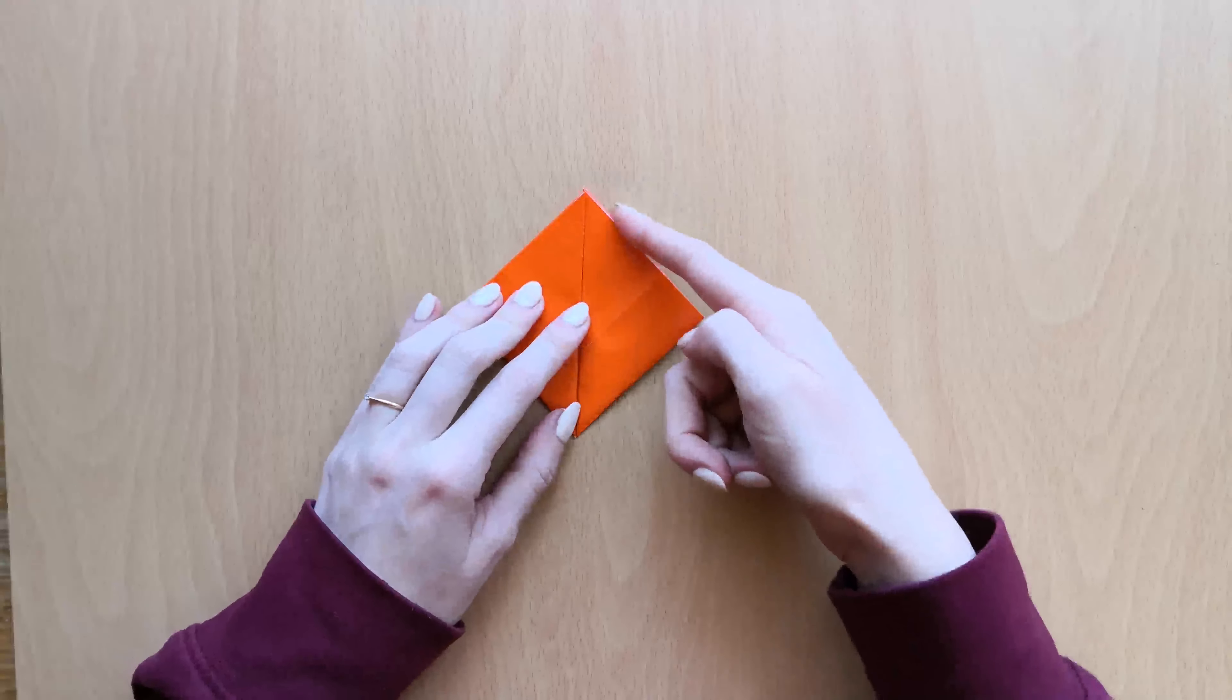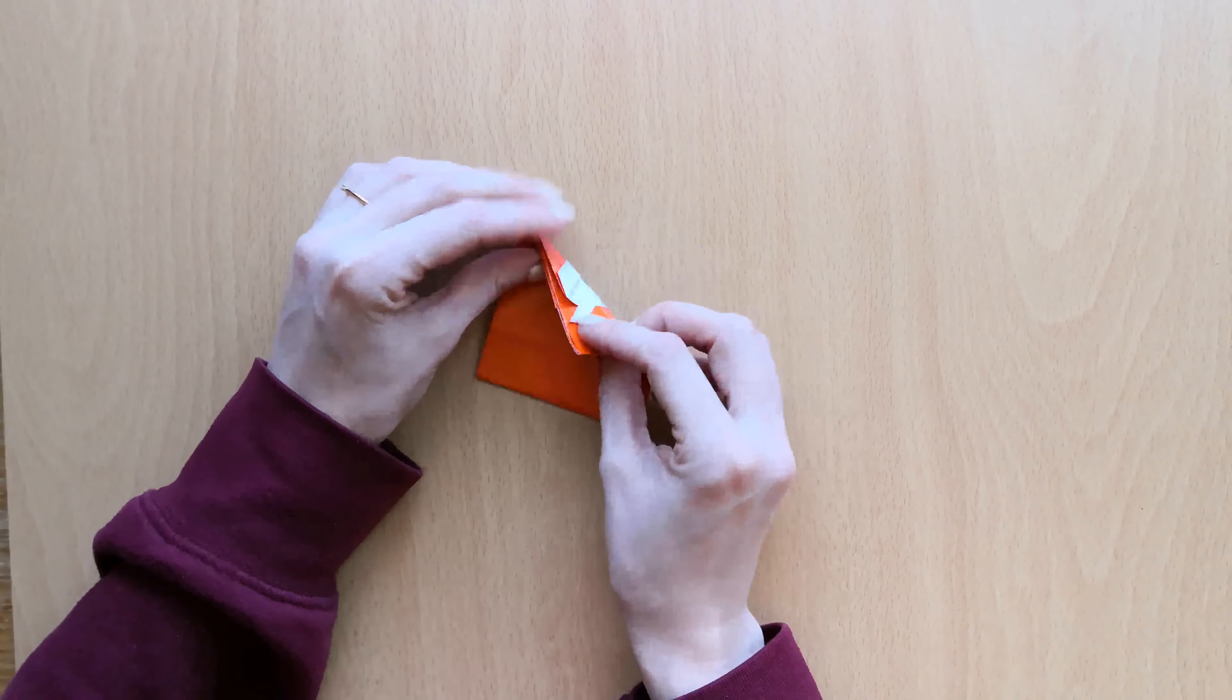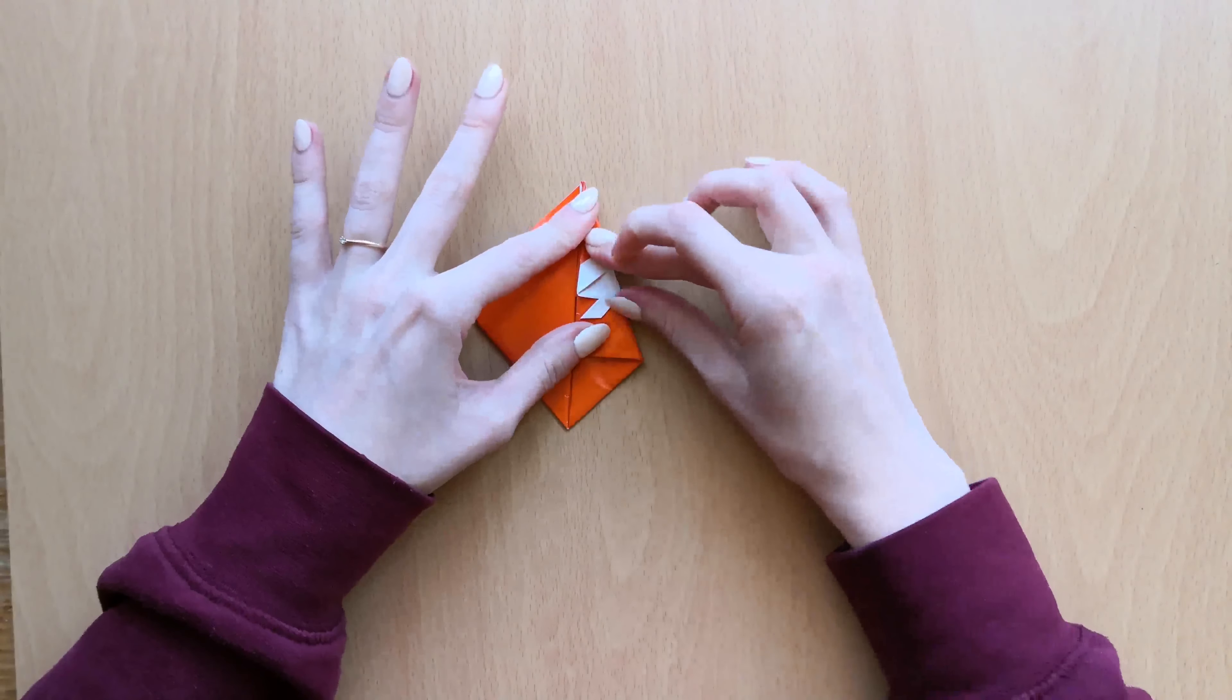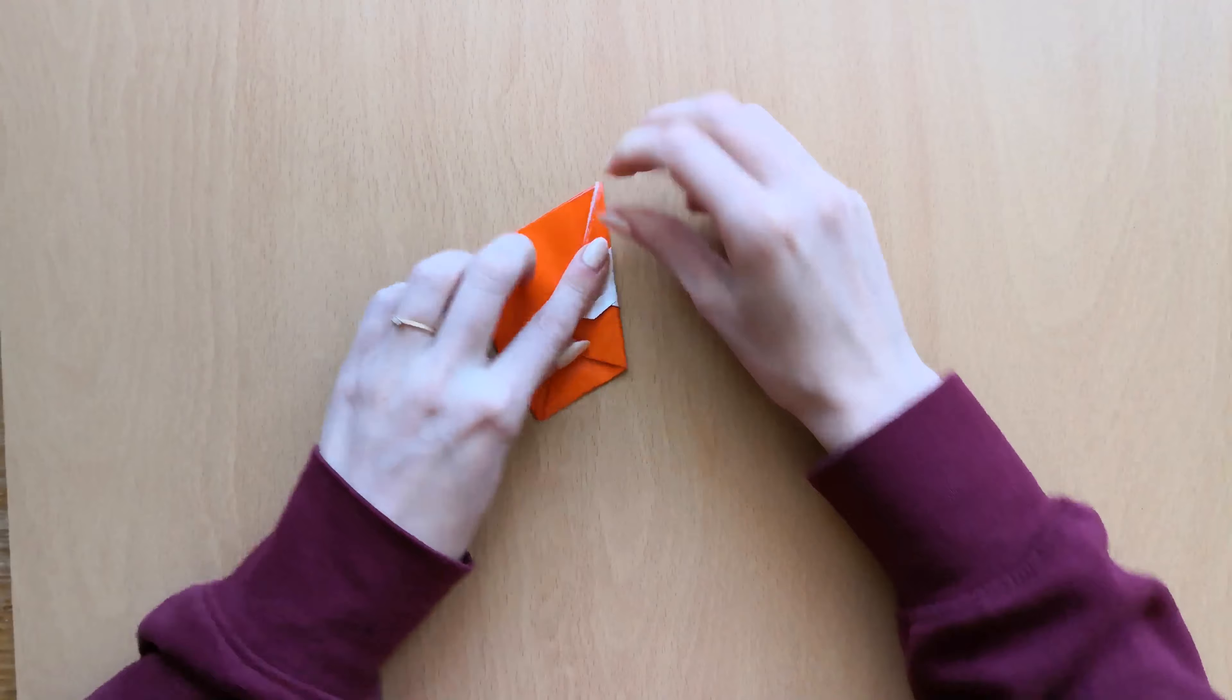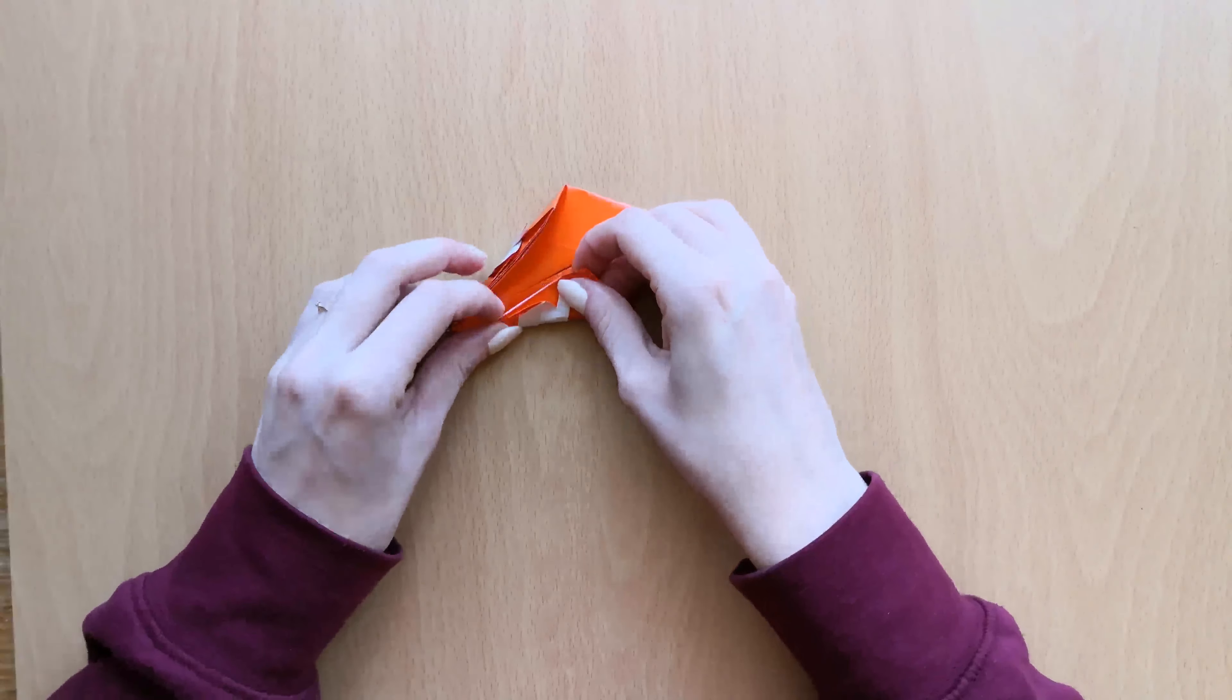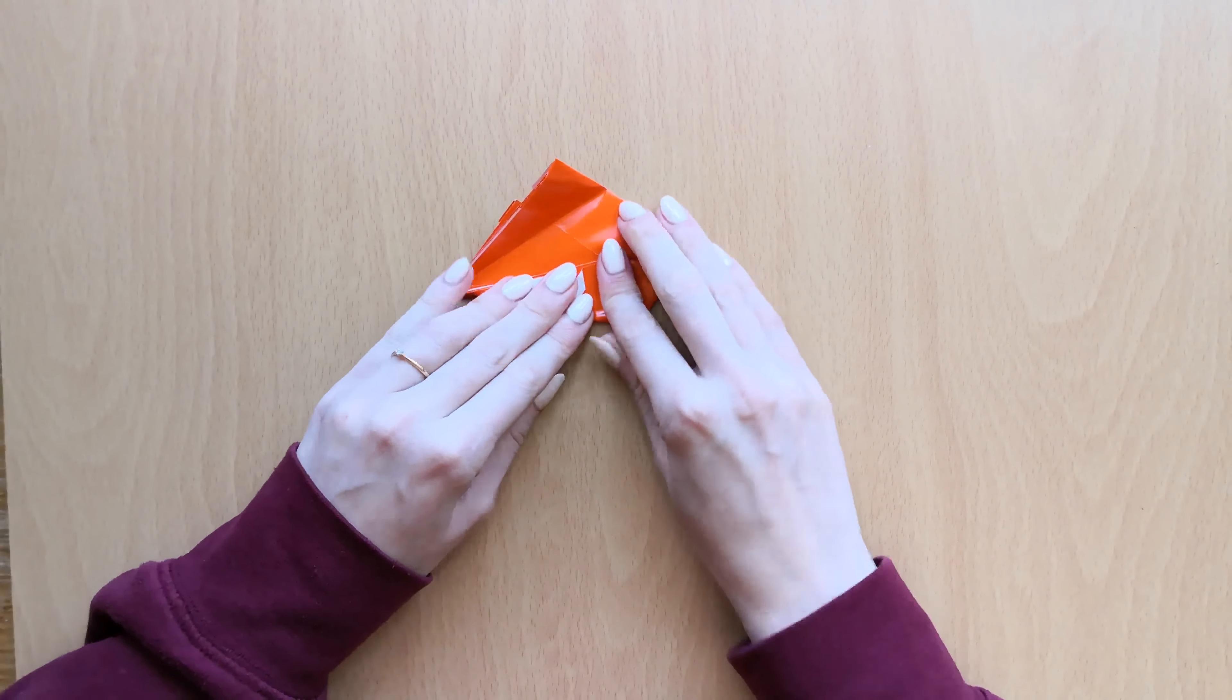And now we'll fold this line into the middle line. When you do this, make sure that you bring all the sides up. And press it down. Do the same with the other side. Bring all of the paper in to the middle. And press it down.